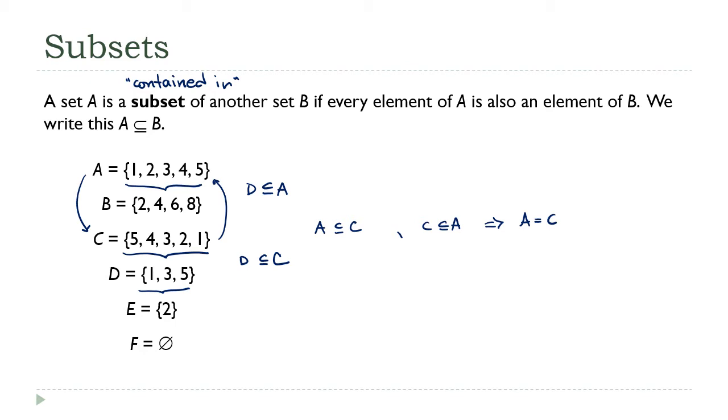Let's try another one. Is set B a subset of anything on there? Well, some of the numbers in B are in A, but not all of them. And to be contained in, it's a completely contained in thing. That's not good enough. What I do notice here is that everything on the E list is also on the B list. So I would say E is a subset of B.